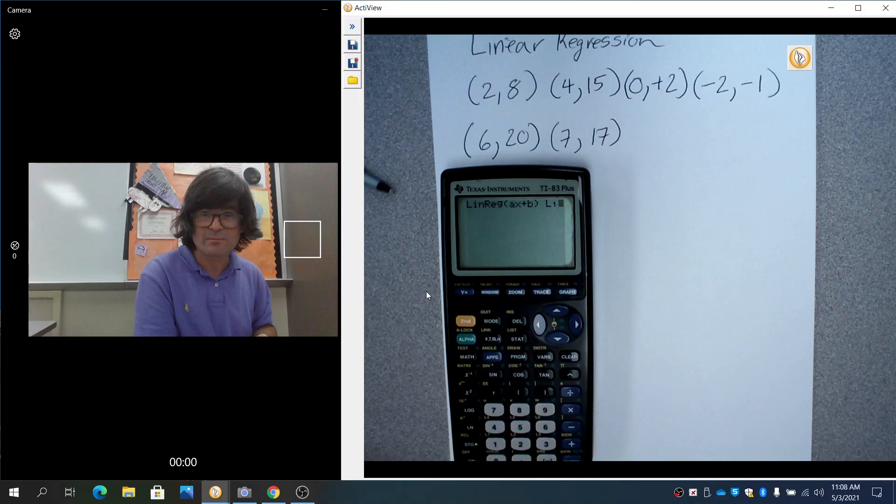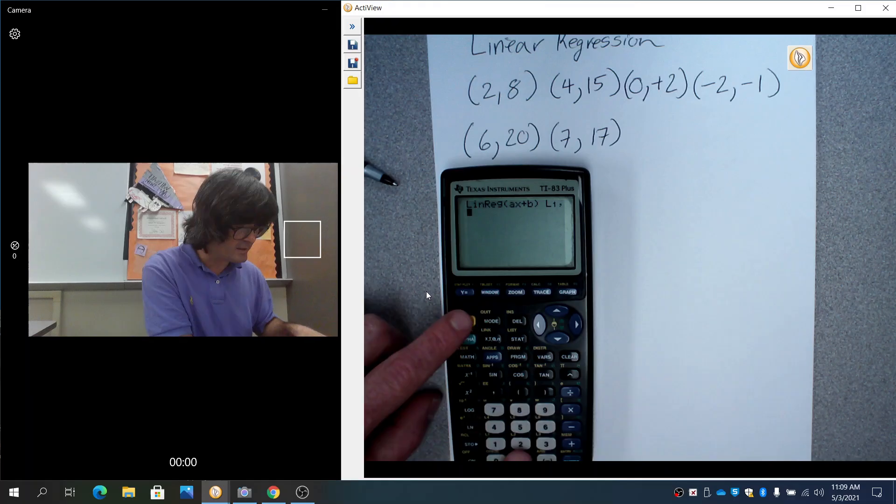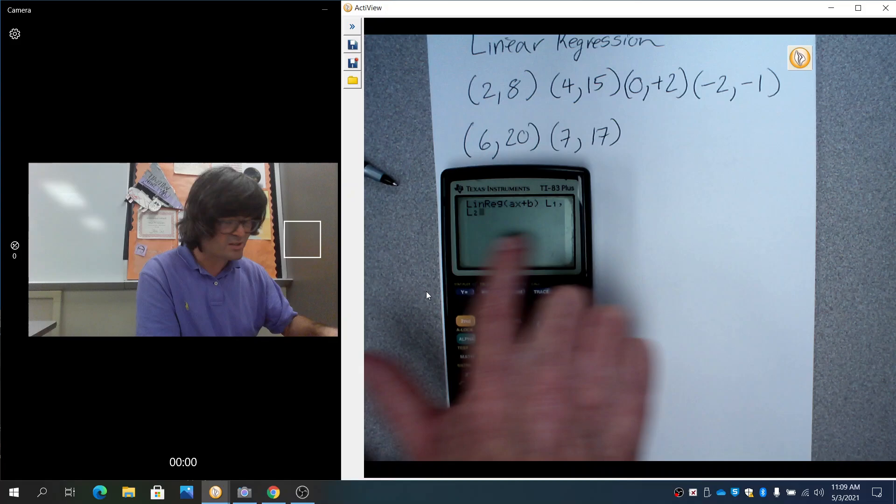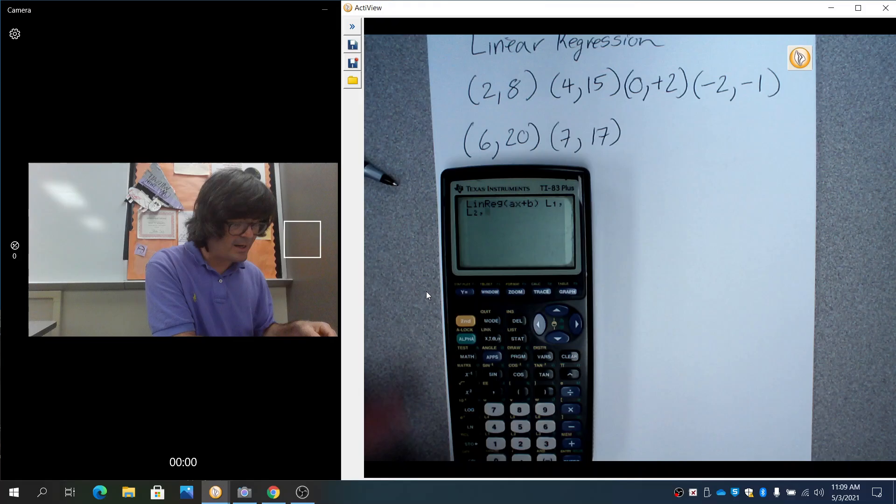It's now automatically programmed to just the default that x is list one, y is list two, but I'm going to just tell it that anyway so that you get used to those steps in case you wanted to put your data in list 4 or something else. I'm going to do second list one right there, just type that in, and then comma. That's x. And then we're going to do second list two for y. So this is where the x is, this is where the y is.